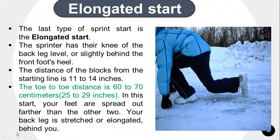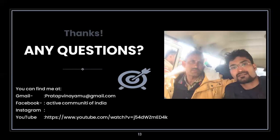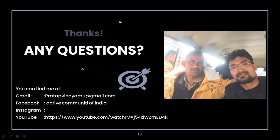In elongated start, it is clearly visible: compared to bunch and bullet where the rear knee came ahead of the frontal toe, and in medium where it was in between, in elongated start the rear knee goes behind the frontal toe. The first block distance from the starting line is 14 to 11 inches; toe-to-toe distance is 60 to 70 cm or 25 to 29 inches. The name elongated start comes from the elongated or long rear leg position. That's all for today — as soon as my health improves, we will do many more classes. See you in the next class, namaste.